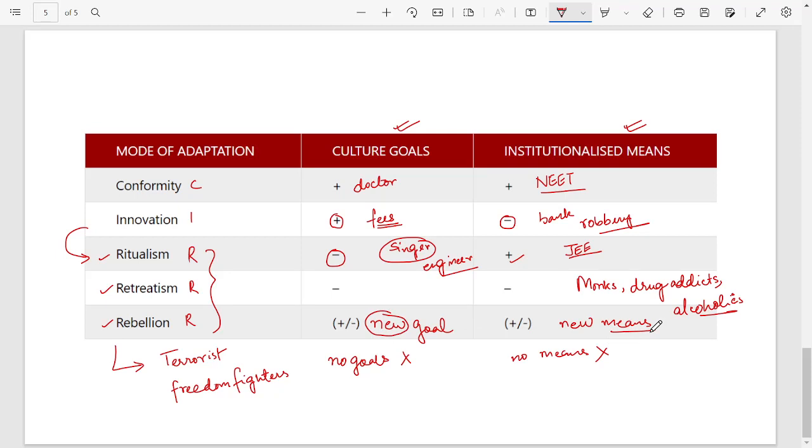And to achieve them, their means are also very different. They find out new means, for example violence, or let's say Gandhi ji's satyagraha, which is very different from our current day-to-day means. So always remember, we keep both plus and minus in rebellion, and in means also plus and minus both, because here we find out new goals which can be positive or negative, or new means which can be positive or negative.